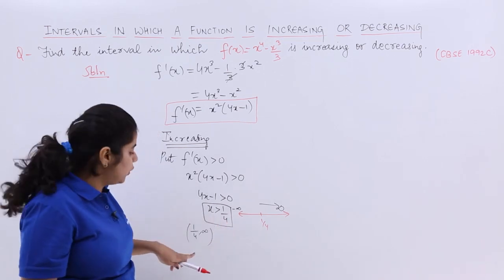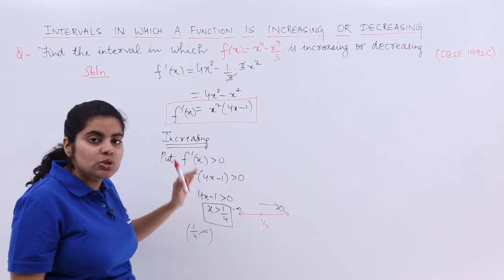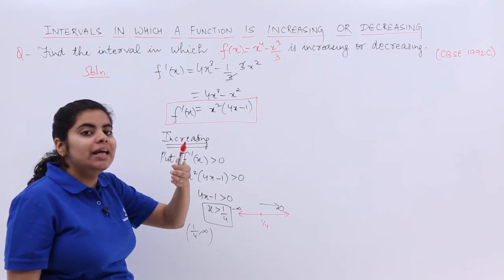This side means what? The interval is 1/4 to infinity. Since there is not equal to, so you are not going to put closed brackets. So (1/4, ∞) is the interval in which the function is increasing.